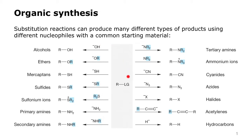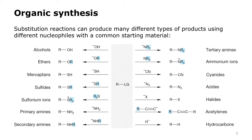Hydroxide ion can displace a leaving group to produce an alcohol. Alkoxide ions can react in a similar fashion and produce ethers. Sulfur is an excellent nucleophile in the form of mercaptide or thiolate ions and can produce mercaptans or sulfides. Even neutral sulfur compounds, because sulfur is so nucleophilic, can react and you actually form sulfonium ion salts.